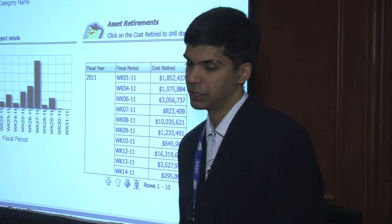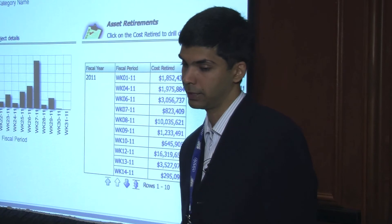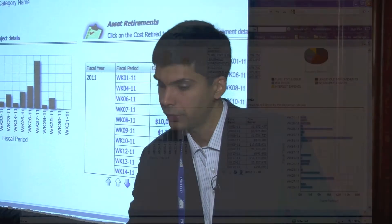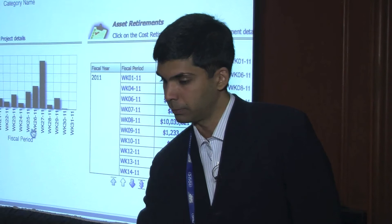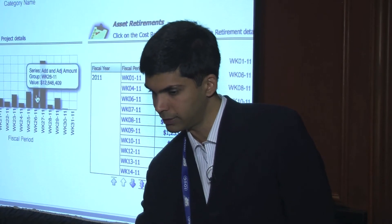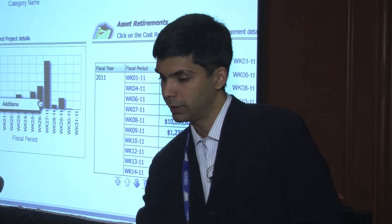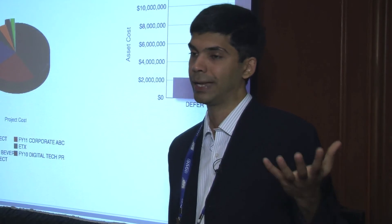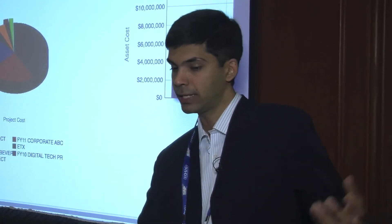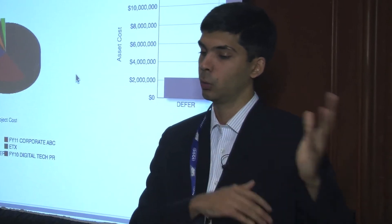We have a report called Asset Additions and Adjustments, which gives a breakdown of the total additions and adjustments by every period — in this case by week. The same report is also shown in a bar graph. In a particular week called 2611, the total value of additions and adjustments is about 12 million. When I get into the details, the first set is from a projects point of view — the next screen tells you the different projects your company is doing that caused the addition worth 12 million.